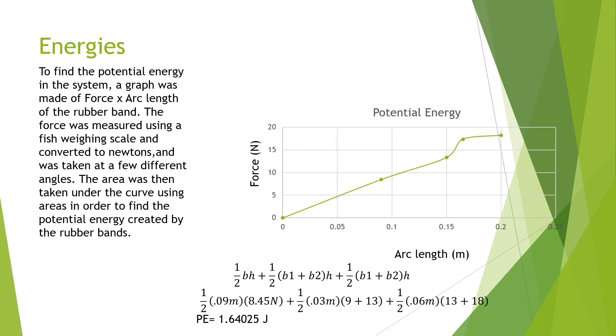To find the potential energy in the system we made a graph of force times arc length of the rubber band. We find the area underneath the graph and that turns out to be the potential energy of the system.